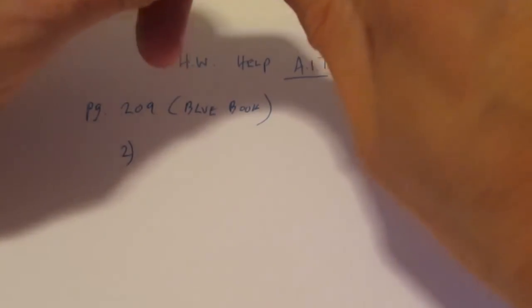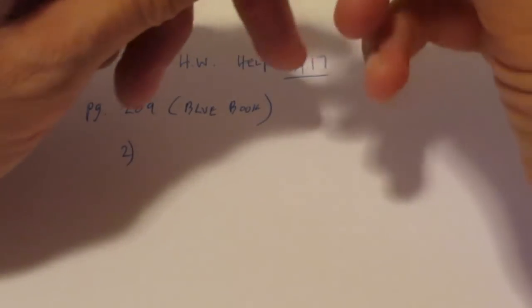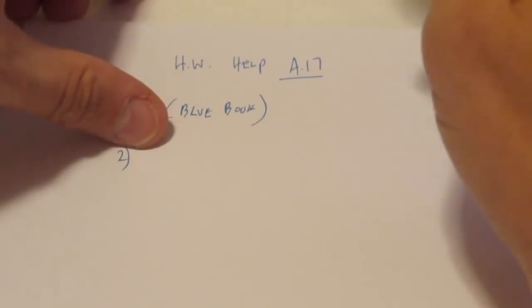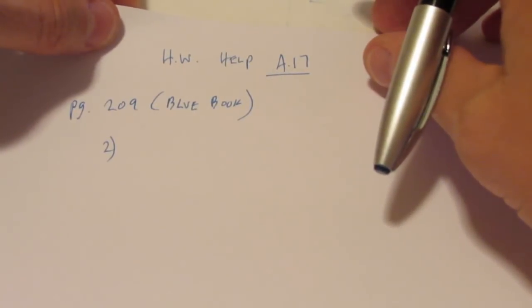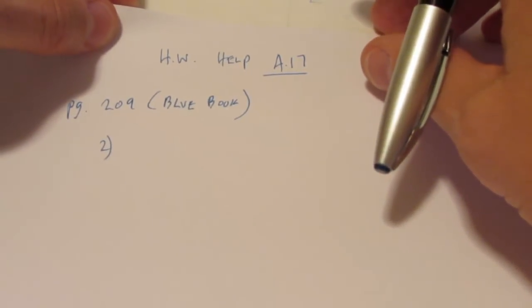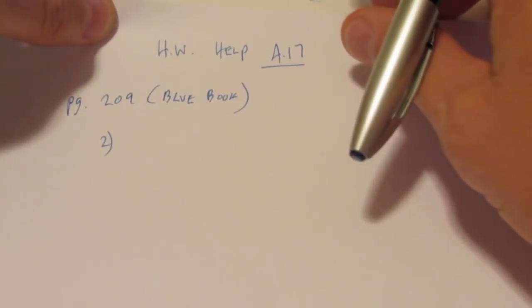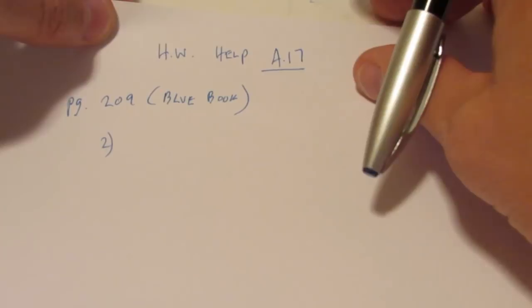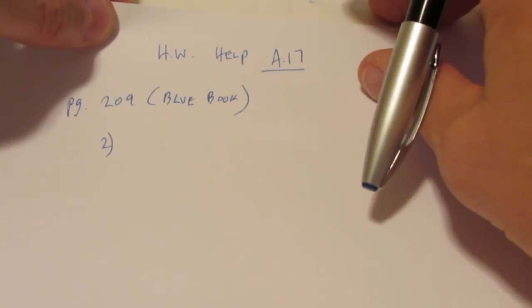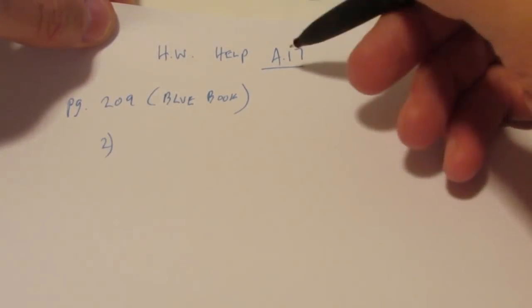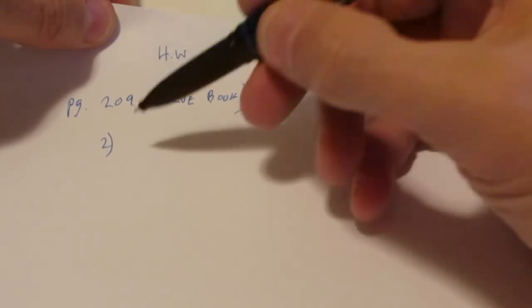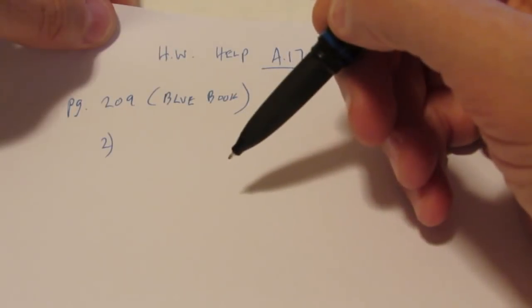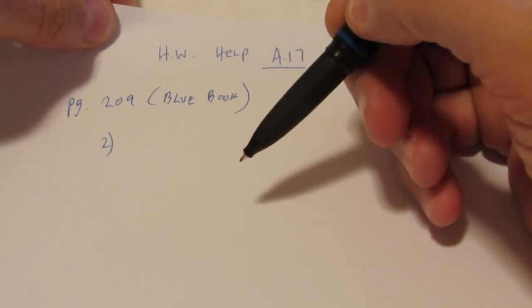Okay folks, time for a little bit of homework help. I'm going to help you guys out with assignment 17. We'll see how well it goes. Maybe we'll even hop in and do a little bit of 18 if we can, if this goes smoothly. So assignment 17, now if you have the blue book that's page 209 and we begin with problem number two.